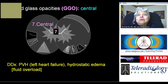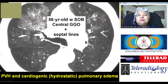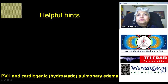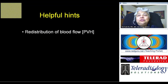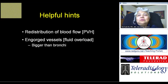Coming to ground glass opacities with a central distribution, the differential diagnosis is pulmonary venous hypertension associated with left heart failure, or hydrostatic pulmonary edema due to fluid overload. This patient with pulmonary venous hypertension has septal lines and ground glass opacities in the regions of increased perfusion, with redistribution — the vessels in the non-dependent lung zones are bigger than the dependent vessels. The distinction between left heart failure and fluid overload is that in fluid overload, engorged vessels are bigger than accompanying bronchi all over the lung rather than showing redistribution.